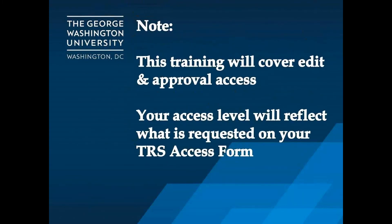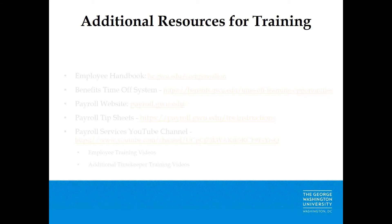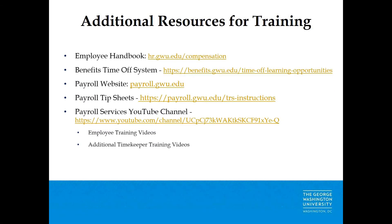Note: this training will cover edit and approval access. Your access level will reflect what is requested on your TRS Access Form. Additional resources for training can be found in the Employee Handbook at hrgwu.edu/compensation, the Benefits Time Off System at benefits.gwu.edu, payroll tip sheets at payroll.gwu.edu/TRS-instructions, and the Payroll Services YouTube channel with employee and timekeeper training videos.